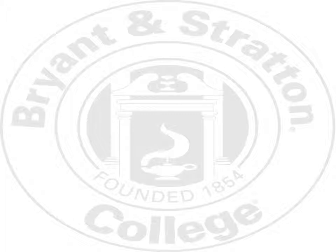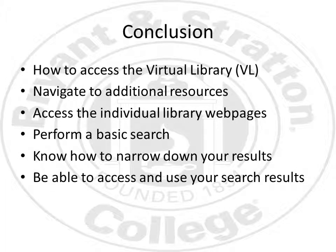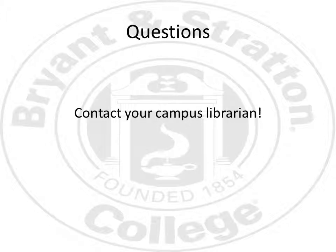Now you've completed our Virtual Library tutorial. We've covered a lot of information, so let's conclude. You've learned how to access the Virtual Library, whether on campus or off. You can now navigate to additional resources such as Smart Thinking and Question Point. You can access individual library web pages, such as the Bryant & Stratton Virginia Beach Campus page. You can perform a basic search and narrow down your results using the limiting panel on the left-hand side. And you can access and use your search results, whether they be PDF or HTML. Thank you for taking the time to listen to our tutorial. If you have any additional questions, please ask your campus librarian — you can call the library, send an email, or come in and see us. Thank you for participating, and I hope you've learned several new things that will help you during your time as a student at Bryant & Stratton College.